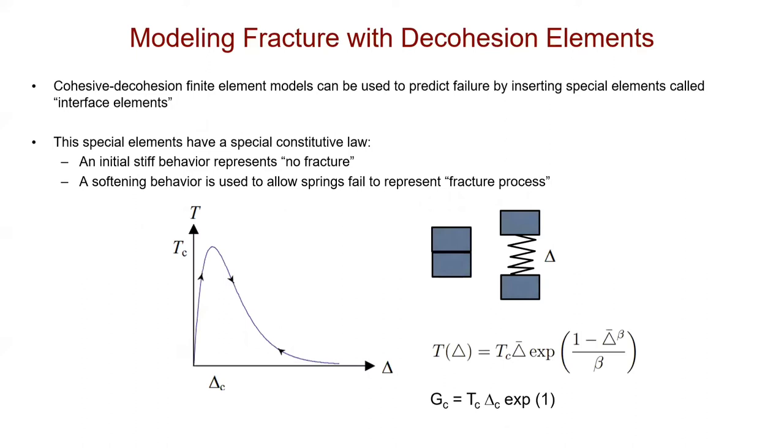Cohesive or decohesion elements can be used to predict failure by inserting special elements called interface elements. Think that you have two blocks of material that are perfectly bonded. I'm going to assume between these two blocks there's a spring that is infinitely stiff. If I were to try to pull them apart, these blocks will not be pulled apart very easily because it's very stiff.